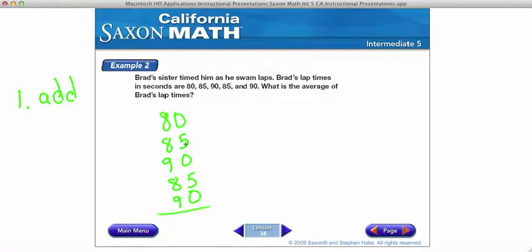Even though two of these repeat, you need to add all of them because each one of these represents one lap. So he swam a total of five laps.